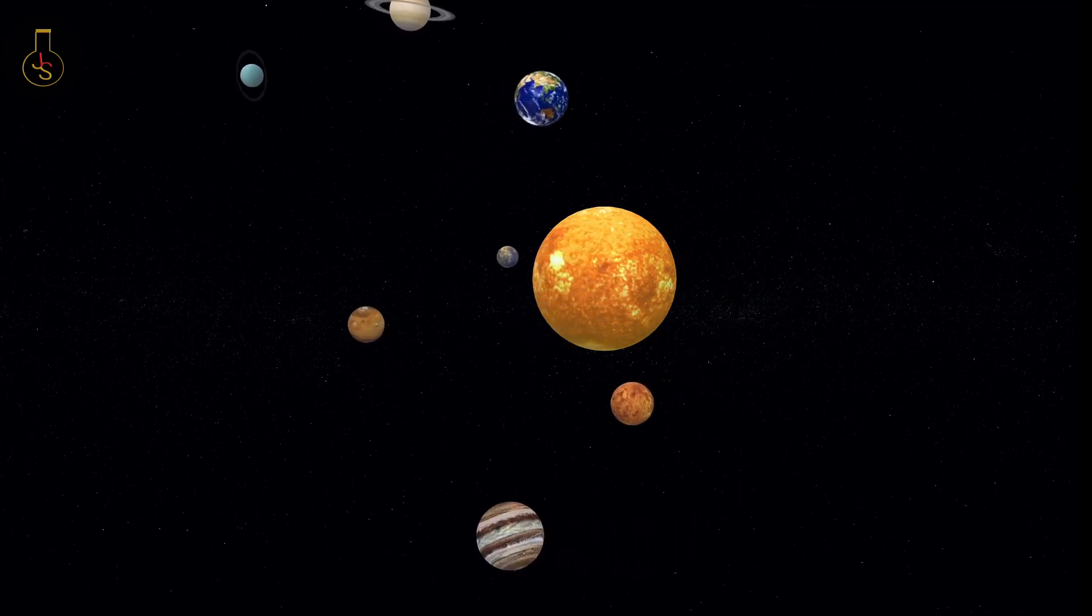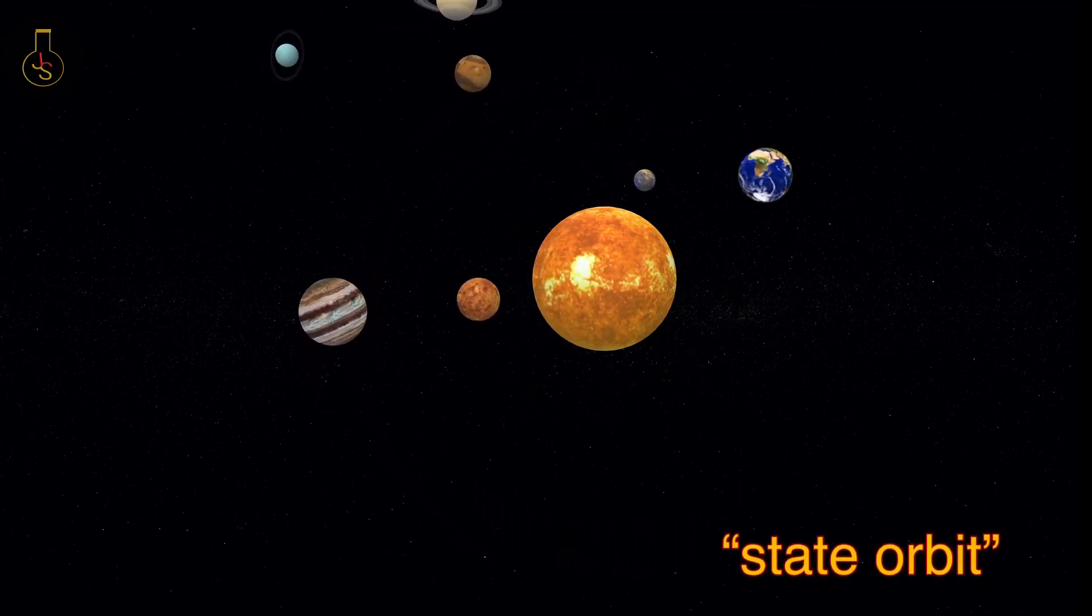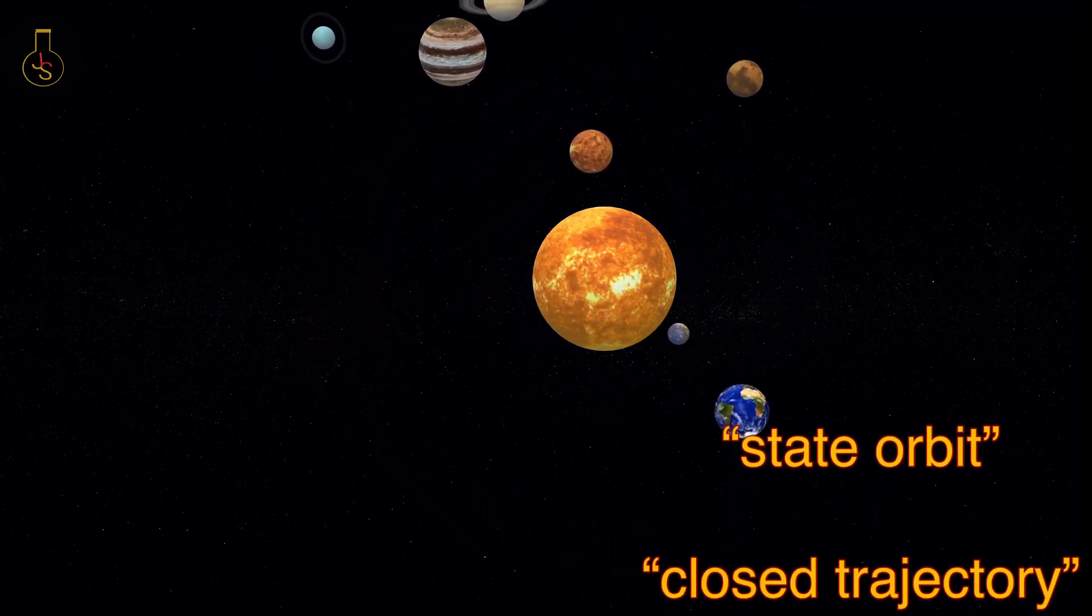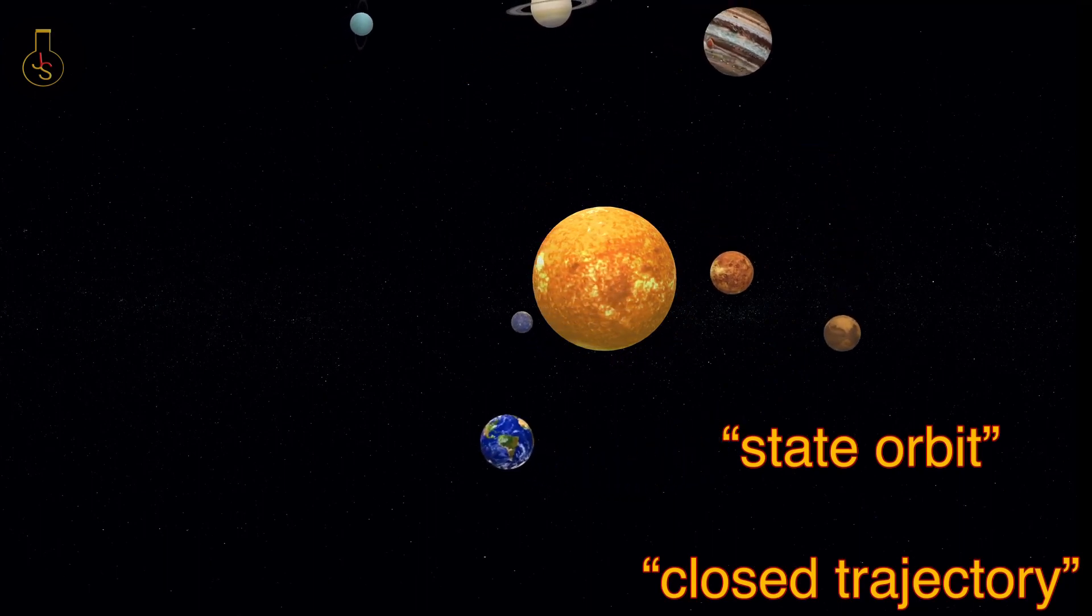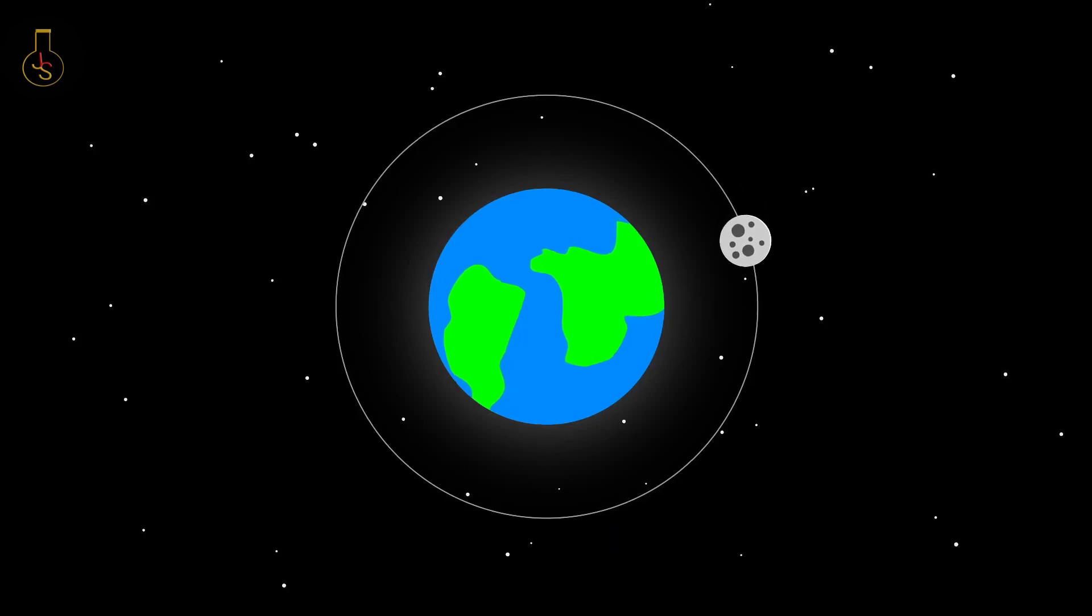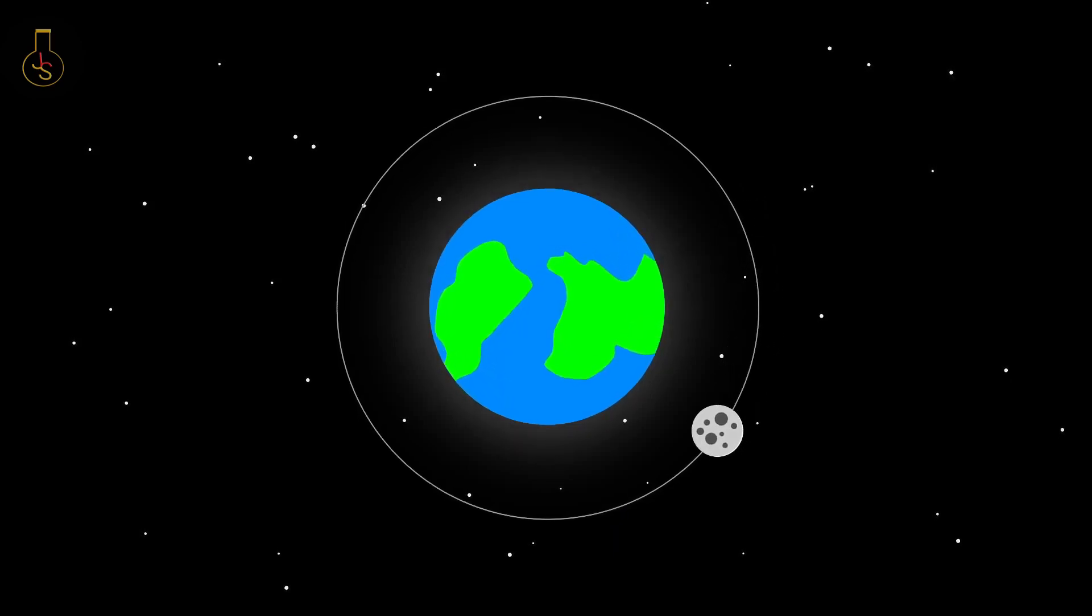Scientists use phrases such as stable orbit or closed trajectory. In other words, falling and missing. This principle applies to all gravitationally orbiting mechanisms.